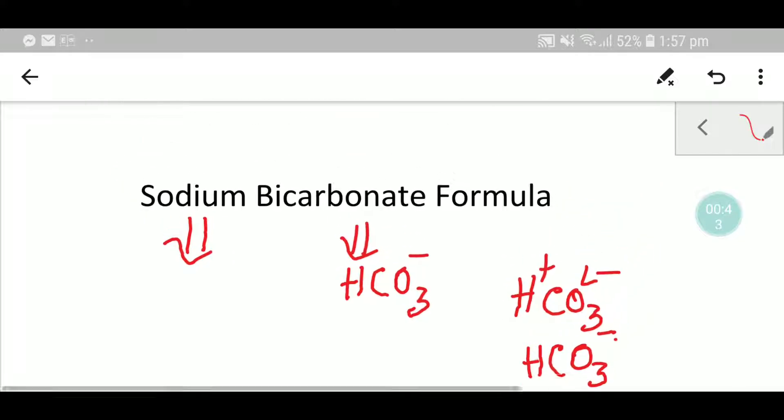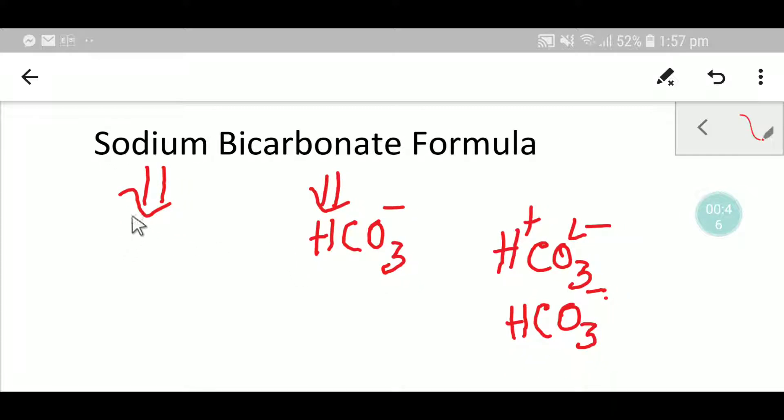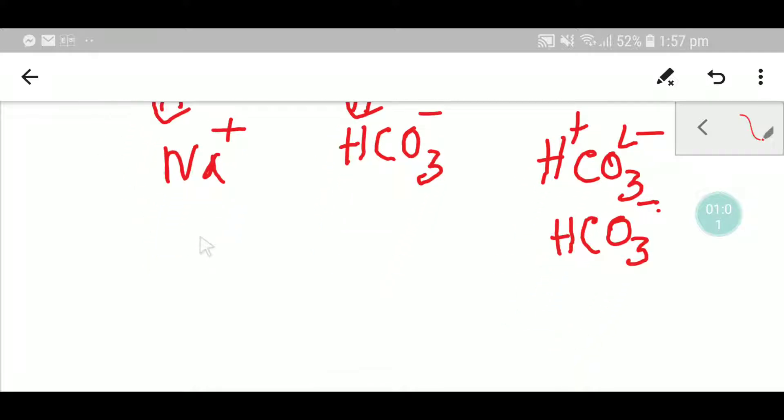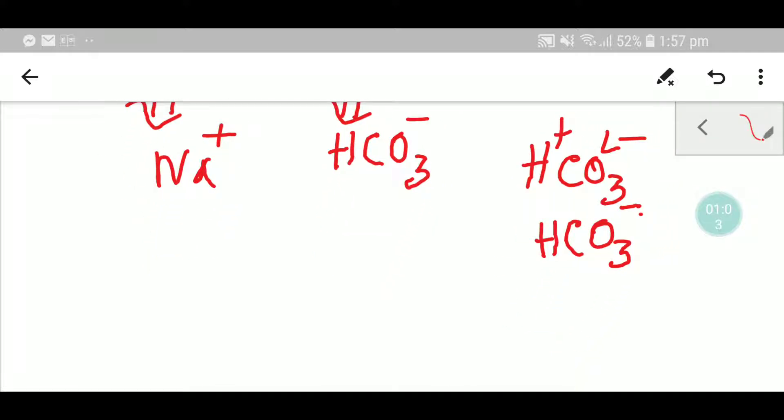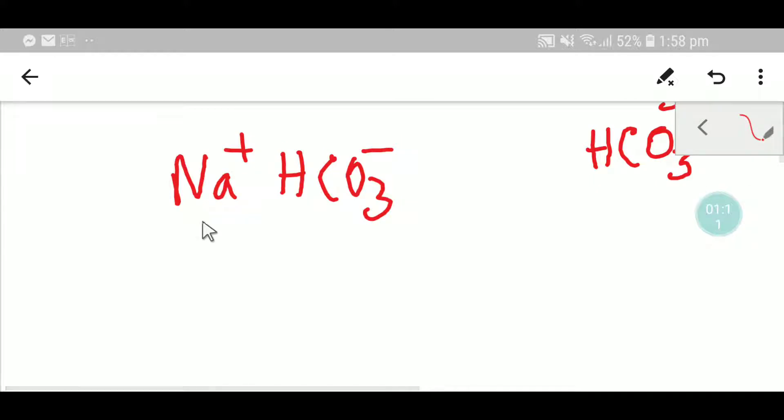Now we need to write the symbol of sodium. This is Na. Sodium is an element of group one, so it will release one electron to achieve the electronic configuration of an inert gas. Now write the two ions side by side to write the formula of sodium bicarbonate.